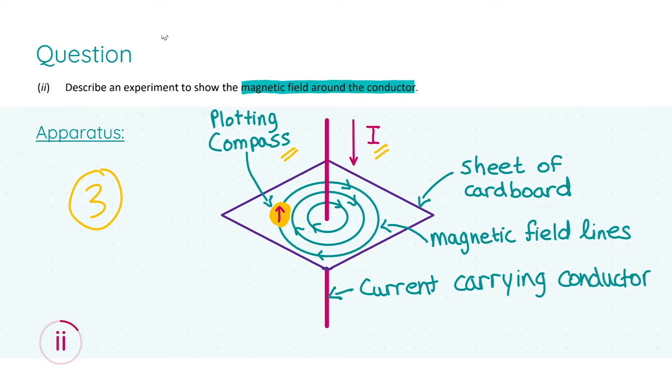You can either have this current going up or down, but make sure you have the magnetic field lines pointing in the correct direction, which can be done by using the right hand grip rule. More on that will follow throughout the video.